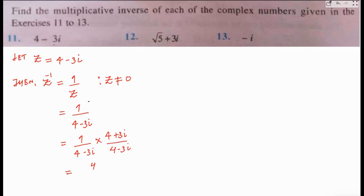So 1 times (4 plus 3i) gives 4 plus 3i in the numerator. The denominator is (4 minus 3i)(4 plus 3i). We can use the concept of a squared minus b squared, since it's in the form (a minus b)(a plus b).